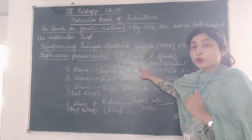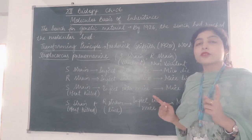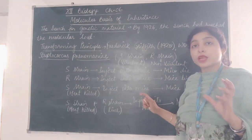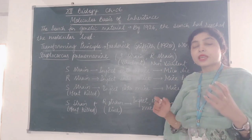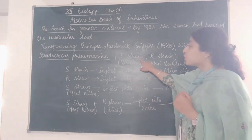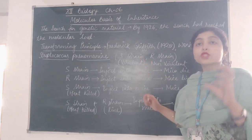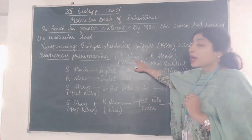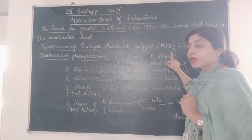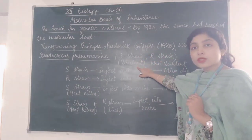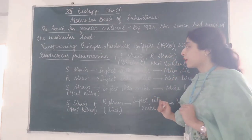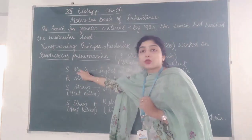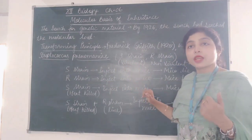The S-strain is virulent because it has a polysaccharide mucous-like coat. When Frederick Griffith injected S-strain into mice, the mice died because S-strain is virulent.